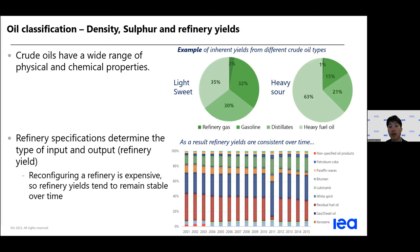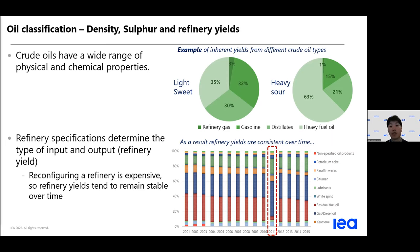This stability is really useful for us to validate energy data quality. For example, here we looked at refinery yields from 2001 to 2015. Looking through this historical time series of refinery yields, in 2011 we observed a strange outlier in the refinery yields, which prompted us to validate this data with the data provider.